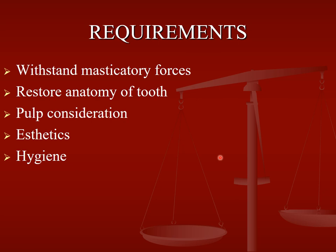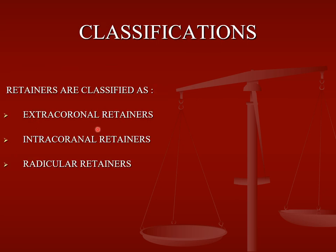Now we'll be reading about retainers. The requirements are: it should be able to withstand masticatory forces, it should be able to restore anatomy of the tooth, there has to be some pulp consideration given if indicated, aesthetics has to be taken care of, and hygiene is important and has to be maintained. Coming to the classification, retainers can be classified into extra coronal retainer, intra coronal retainer, and radicular retainer.